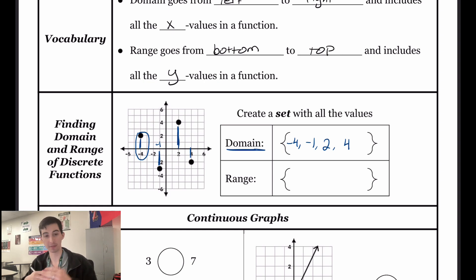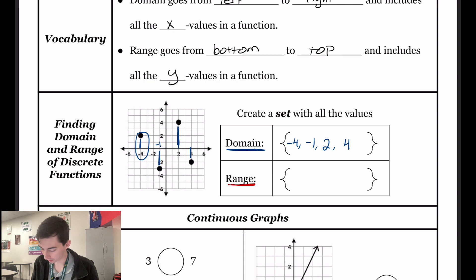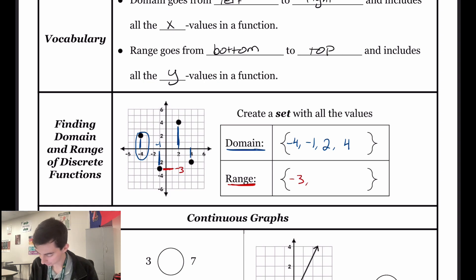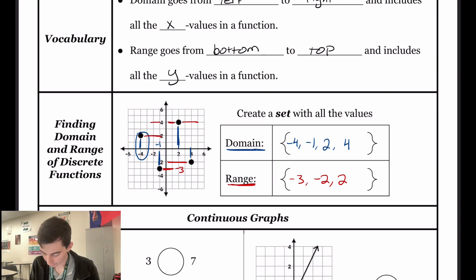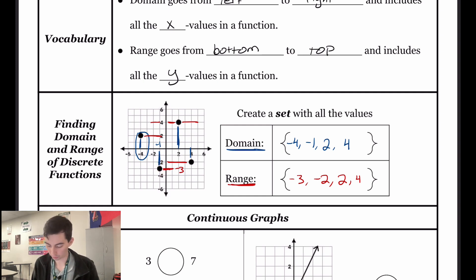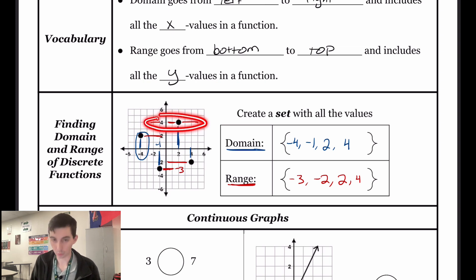Range is the opposite — we're doing from bottom to top, all of our y values. I'm going to change colors and do this one in red. Our lowest point is going to be here at negative three, so that will be my first point on my range. Going up, my y value here would be negative two. Going up again, I'm at the point two. And up one more time, we're at four. So it doesn't matter what the x value is — we're starting from our lowest point and we only care about what the y value is.